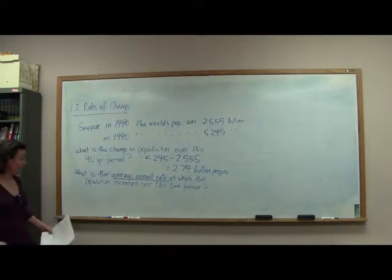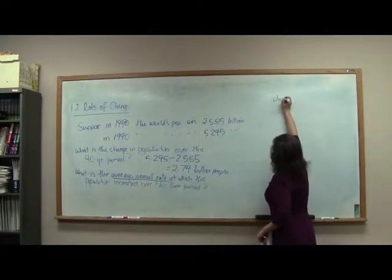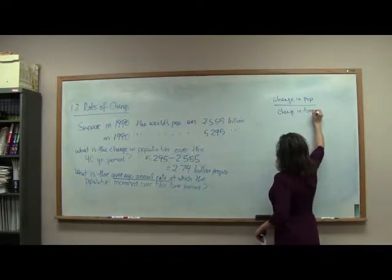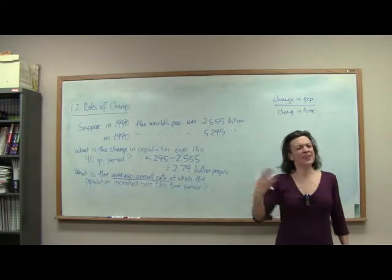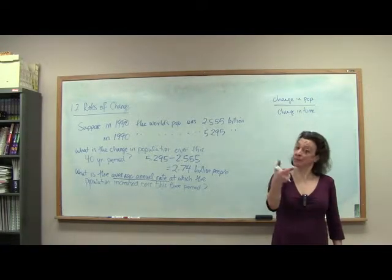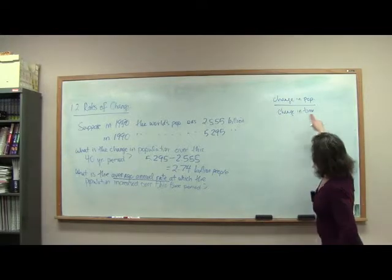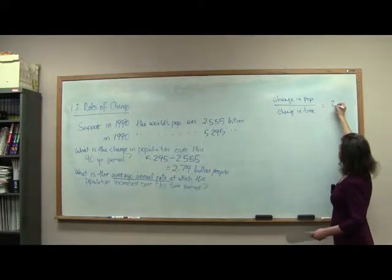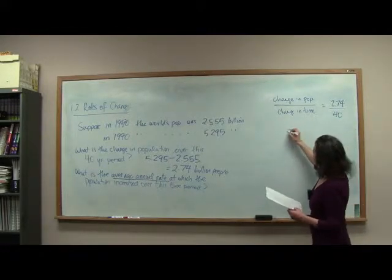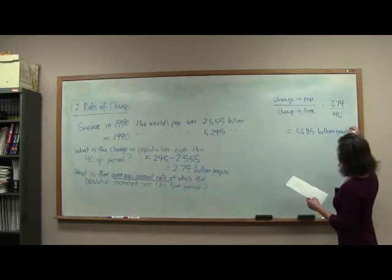How would we determine that? What we would do is take the change in population over the change in time. When we're talking about the rate, we're going to get a ratio. When you talk about the rate at which you drive, you talk about miles per hour. When you talk about fuel consumption, it's miles per gallon. This is population over time. We know what the change in population was — we divide by 40, because that's the change in time — and we get 0.0685 billion people per year.